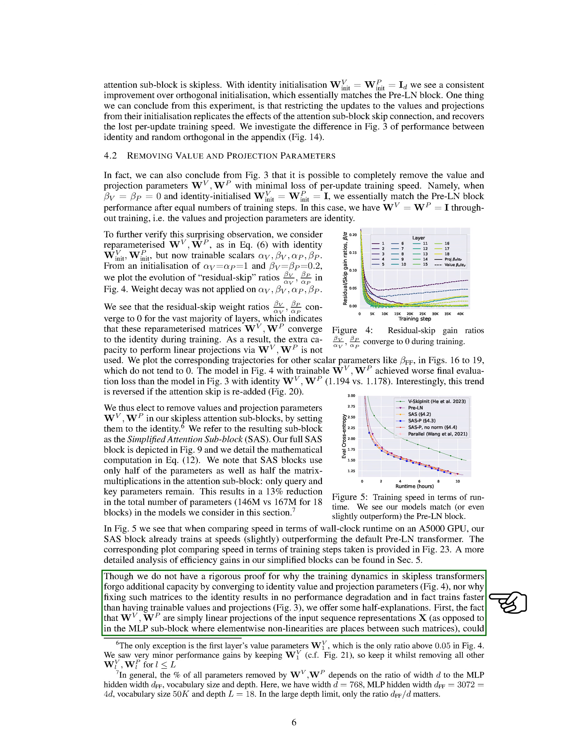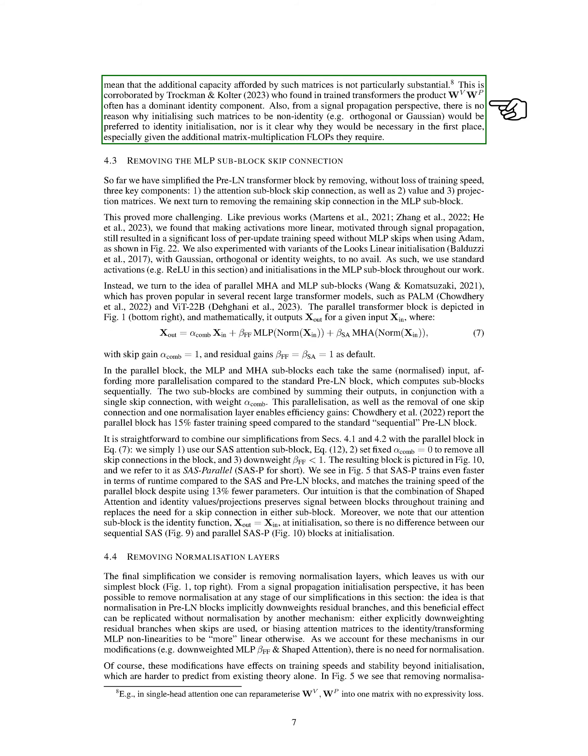First, the fact that W-hat-V and W-hat-P are simply linear projections of the input sequence representations X could mean that the additional capacity provided by such matrices is not particularly substantial. This is supported by previous research which found that the product of W-hat-V and W-hat-P often has a dominant identity component in trained transformers. Furthermore, from a signal propagation perspective, there is no clear reason why initializing such matrices to be non-identity would be preferred to identity initialization, especially considering the additional matrix multiplication operations they require.